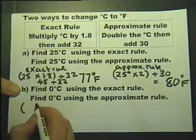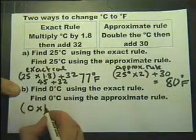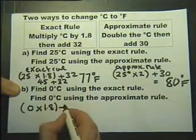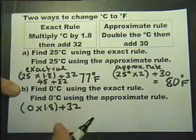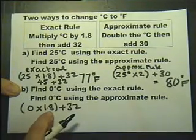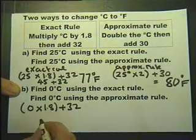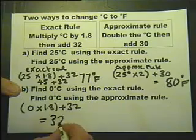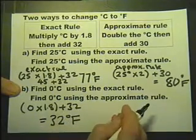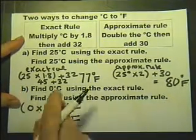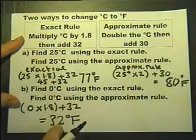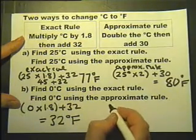So the exact rule is to multiply by 1.8 and then add 32. Don't need a calculator for this. 0 times anything is 0, add 32, which is 32 degrees Fahrenheit. Which is in fact true—that's freezing point of water on the two different scales.